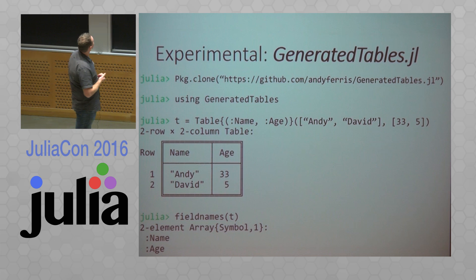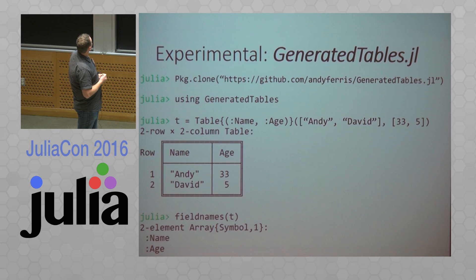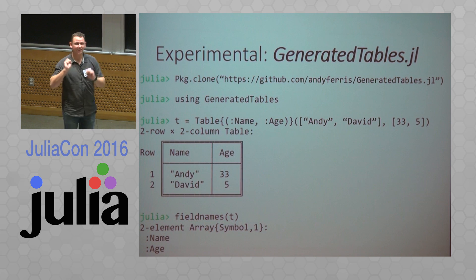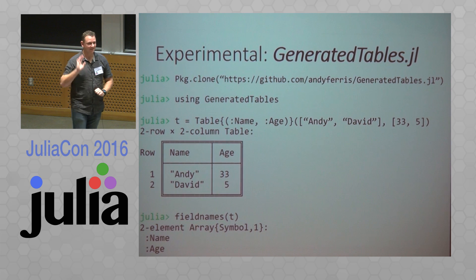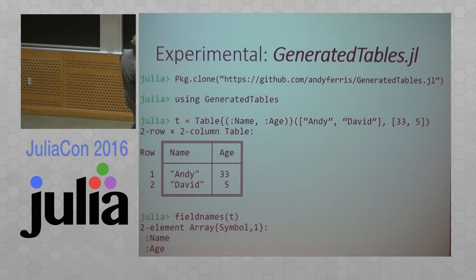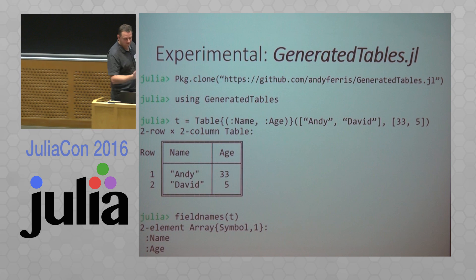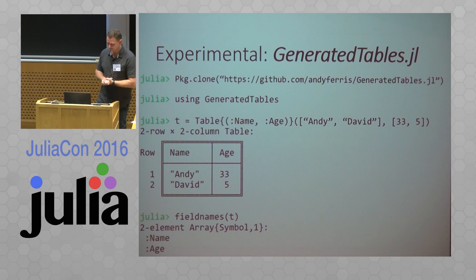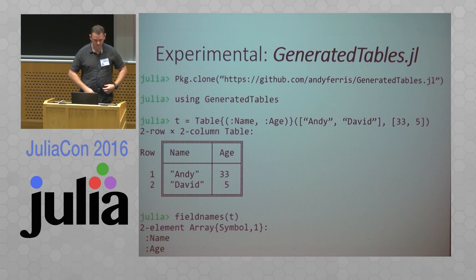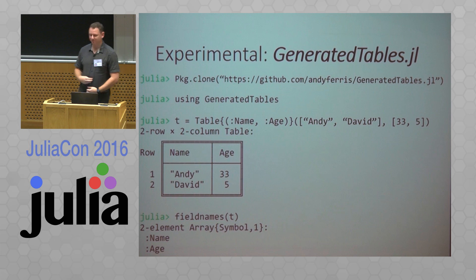So I created this experimental thing called GeneratedTables — you can check it out and try to use it, although it does not work on 0.5 apparently. But it lets you do this extremely cool thing where if my table is called t, I can just type t.age and extract the age column. You could use a macro for the constructor at the top, and everything would feel a bit more natural with these generated types. I'm not sure if that's a thing that could continue working in Julia 0.5 and beyond, but hopefully yes.